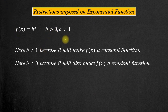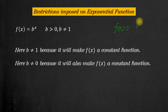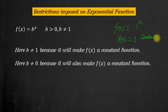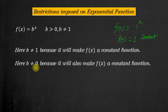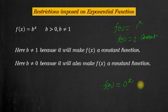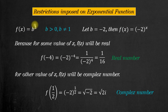Now let's look at restrictions on the base. First, b is greater than zero, and b is not equal to one. If b equals one, then our function becomes f(x) = 1^x, and as you know, no matter what value of x you put in, the function's value will always be one. So it becomes a constant function — that's why b cannot equal one. Similarly, if b equals zero, then f(x) = 0^x, and whatever value of x you put in, it will always equal zero — also a constant function.